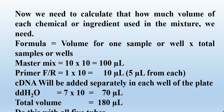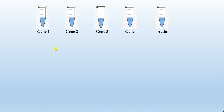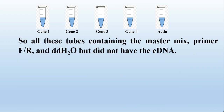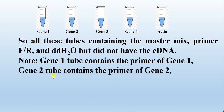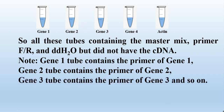Do this calculation for all five tubes. Each tube contains master mix, its respective gene-specific primers, and DDH2O — but not the cDNA yet. Gene 1 tube contains the primers of gene 1, gene 2 tube contains the primers of gene 2, gene 3 tube contains the primers of gene 3, gene 4 tube contains the primers of gene 4, and the internal control tube contains the primers of the internal control.